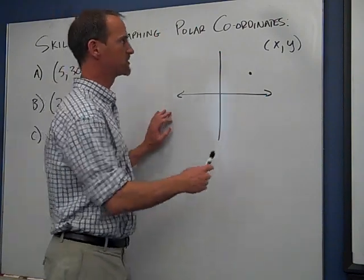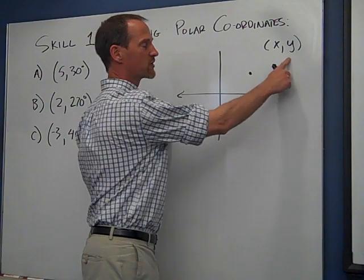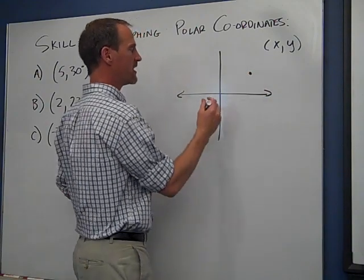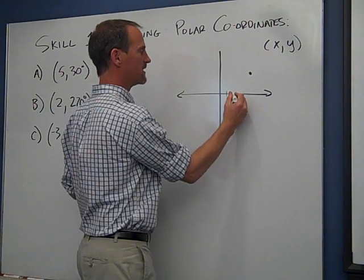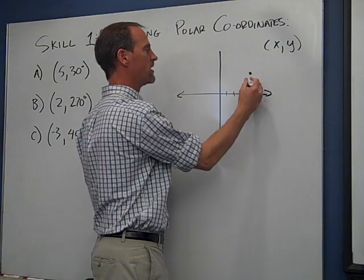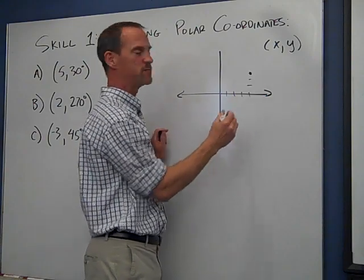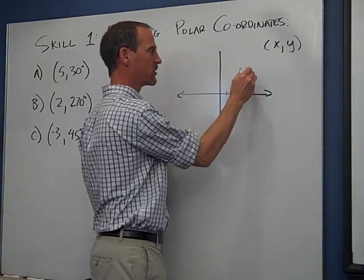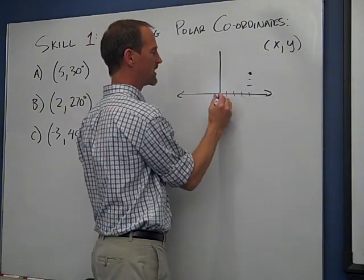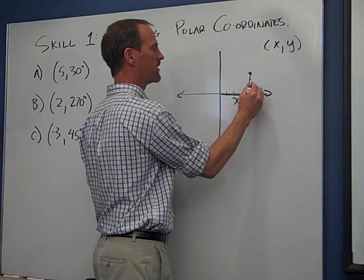Before we do that, though, I want to review what we mean by rectangular coordinates. And of course, this is what you're most commonly used to doing, where we go out a certain number of units for our x direction, and then we go up a certain number of units to get to our y position, and together we find the location of a point in two dimensions with x comma y. Again, out here x and up there y.